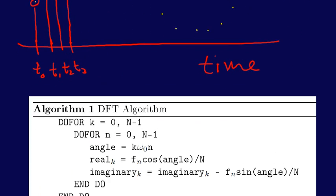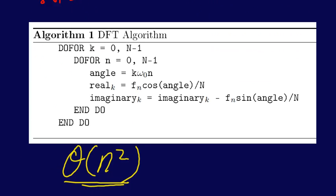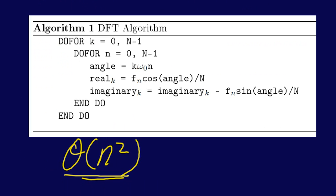The algorithm for the discrete Fourier transform I've typed up and written here. It's basically just a direct application of the equation I showed earlier, where we have this double for loop. The number of operations, as you can see from these two for loops, that it takes to compute the discrete Fourier transform using this algorithm is on the order of n squared, where n is the size of the input.